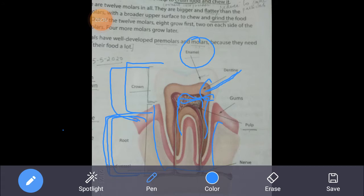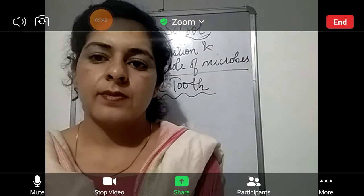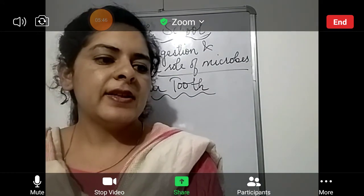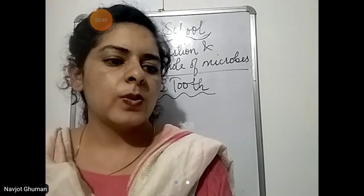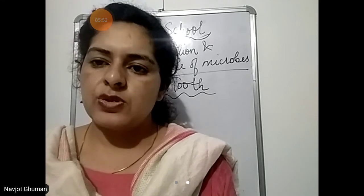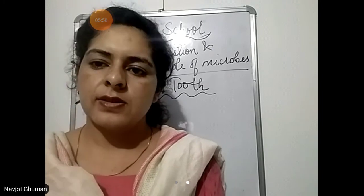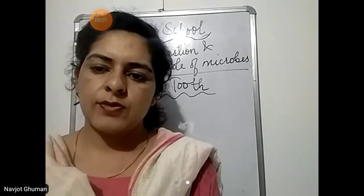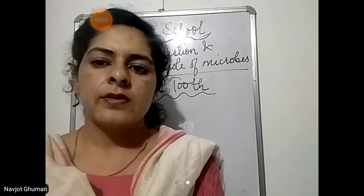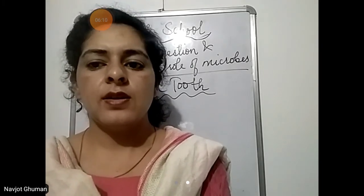Now come to page number 24 — Let's Remember. Label the different types of teeth and write the correct words from the word box against each. There is a picture given; you have to label the types of teeth and write their functions along with them. This is your homework — you will do it yourself and we will discuss it in the next lecture.